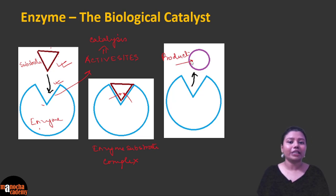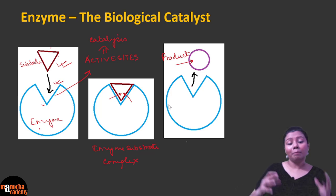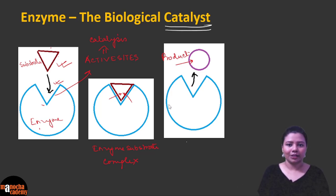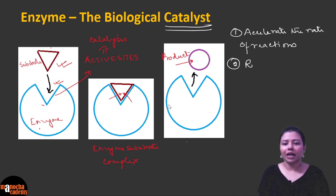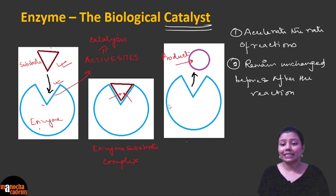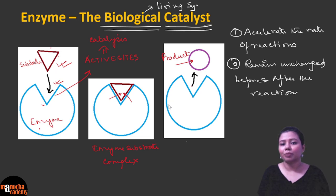Substances that can increase the rate of a reaction but remain unchanged after the reaction are called catalysts. Enzymes are catalysts because: one, they accelerate the rate of reactions; and two, they remain unchanged before and after the reaction. They are called biological catalysts because they are found in living systems. So every enzyme has a specific active site, and the substrate that it acts on has a complementary structure to the active site.